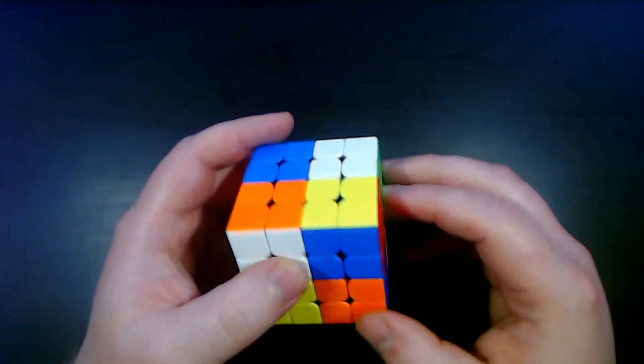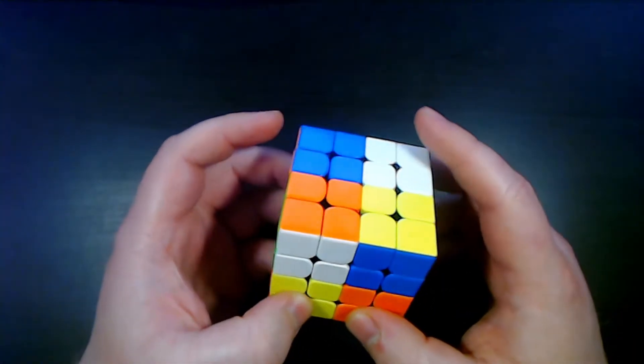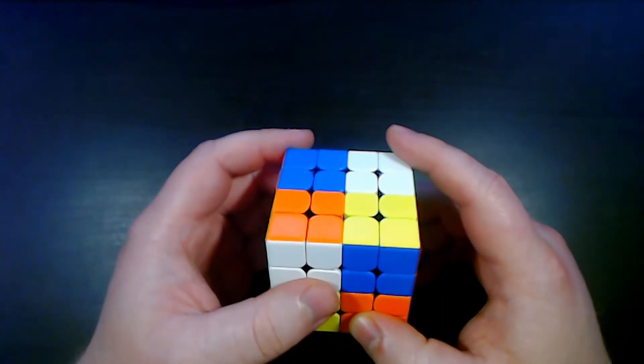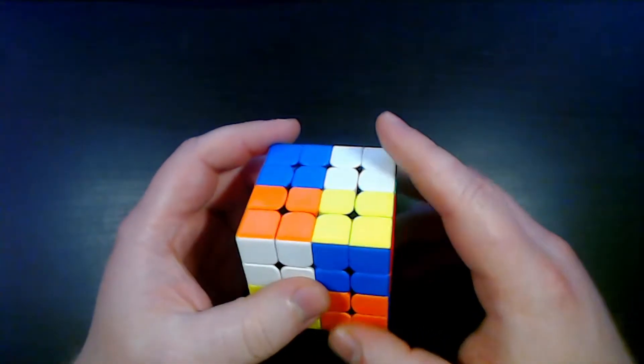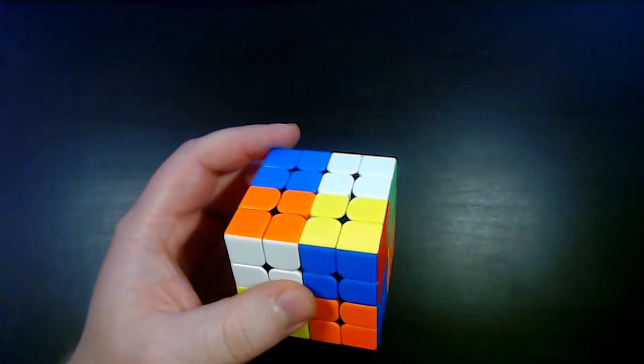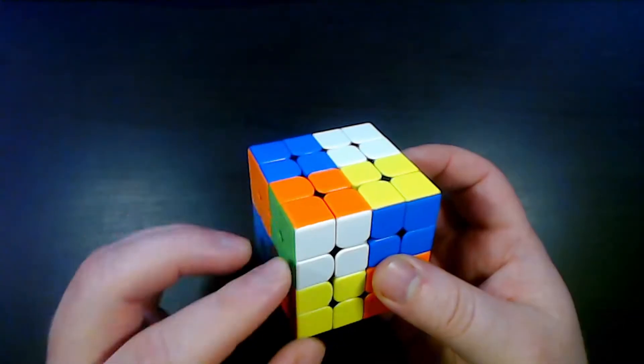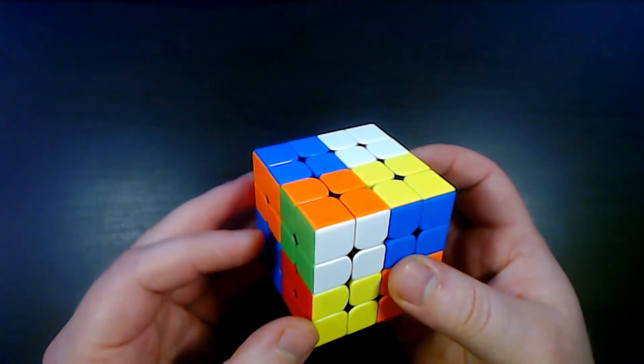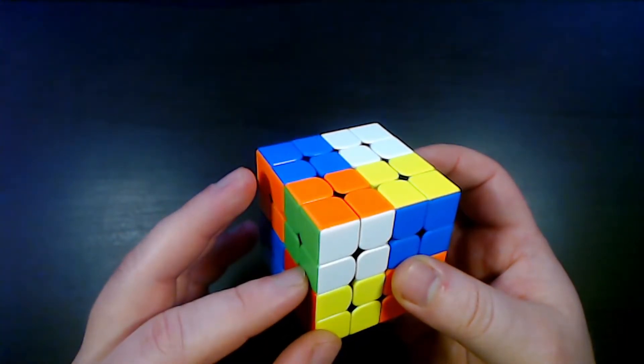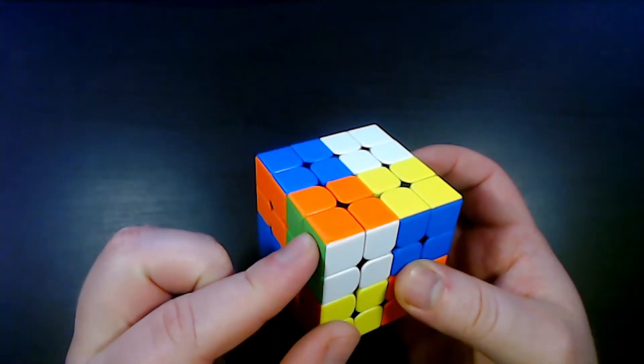However I've created an alg set called edge corner edge edge or ECEE to make this much simpler. I'll have a separate video down in the description that will go into more detail on ECEE itself. But the basic concept of the alg set is you pair up one edge with its corner and put that corner in the top front left position with the solved edge underneath the corner.